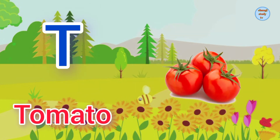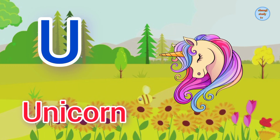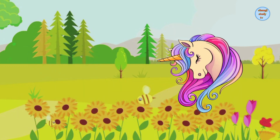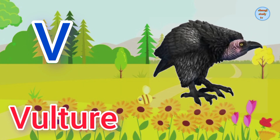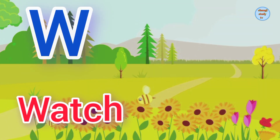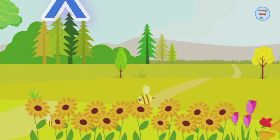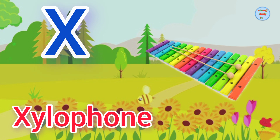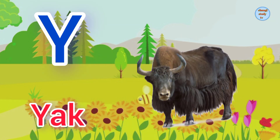T for Tomato. U for Unicorn. V for Vulture. W for Watch. X for Xylophone.